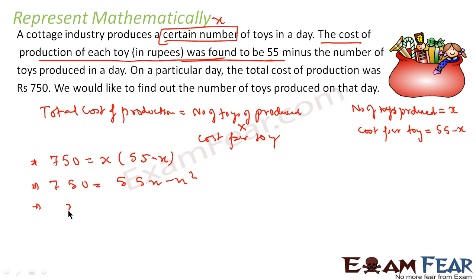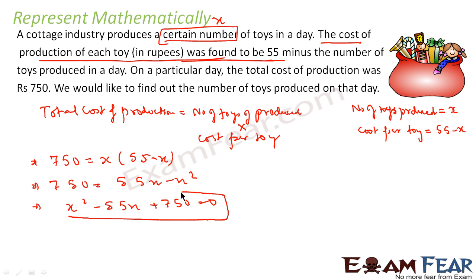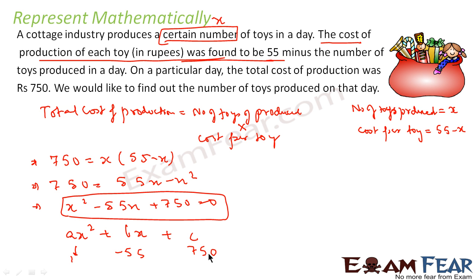Rearranging, we get x² - 55x + 750 = 0, where x is the number of toys produced. This is also a quadratic equation of the form ax² + bx + c = 0, where a = 1, b = -55, and c = 750. We will learn how to solve this later. The key takeaway is how to represent a real-life scenario mathematically: number of toys is x, cost per toy is 55 - x, total cost is x(55 - x) = 750.